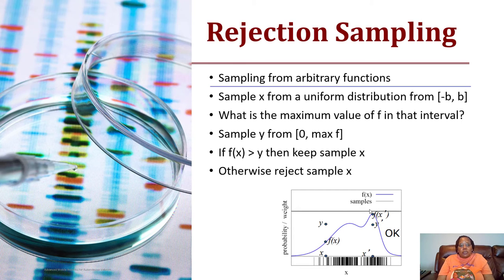We've discussed what it looks like to sample from a normal or triangular distribution. What if you're trying to sample from some arbitrary function that you don't have a formula for? We need a way to do that as well. Sampling from a uniform distribution from b to b: what is the maximum value of f in that interval? You're going to find the maximum value of f in that interval, then sample y from zero to the maximum value of f, and make a decision.